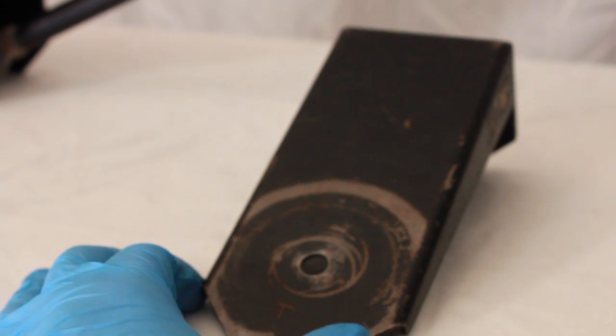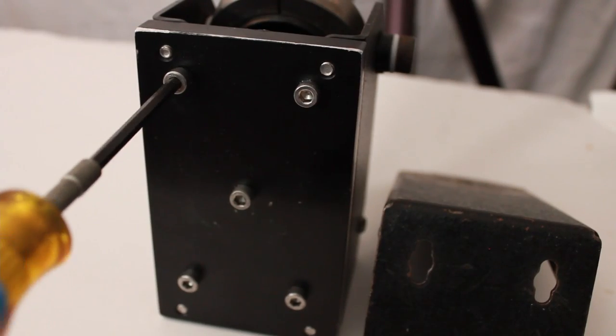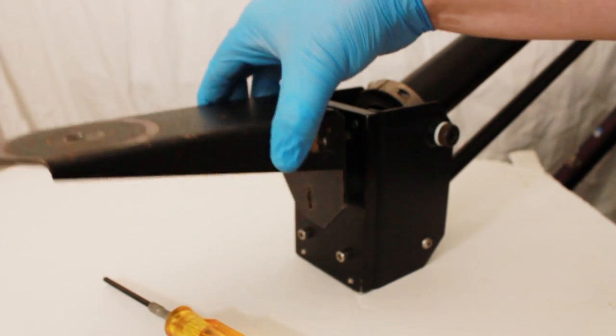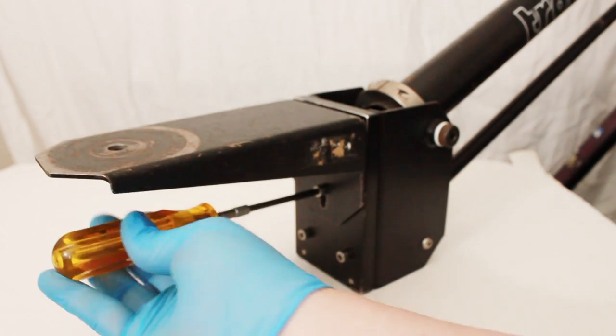Next, attach the camera mount. Loosen allen screws and then attach the mount. Tighten the screws securely.